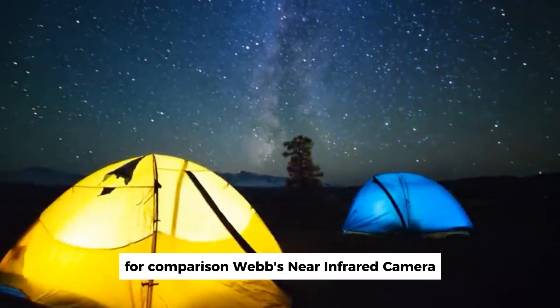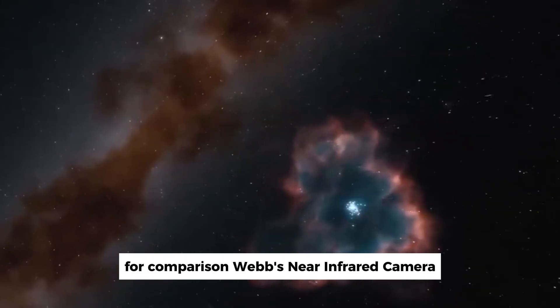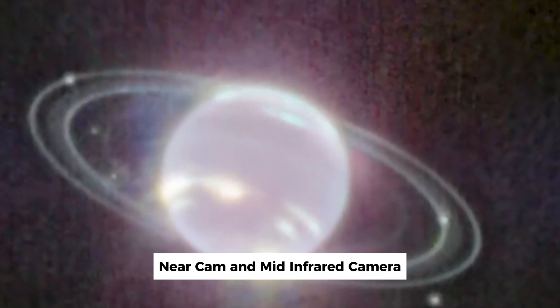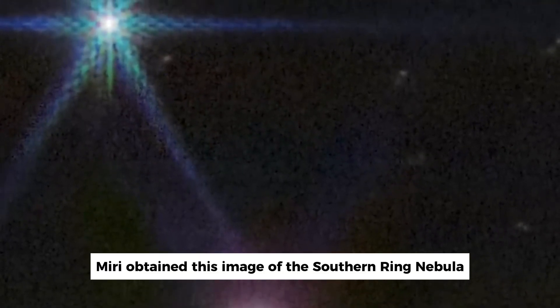For comparison, Webb's near-infrared camera, NIRCAM, and mid-infrared camera, MIRI, obtained this image of the Southern Ring Nebula, NGC 3132. The sky image is oriented by the north and east compass arrows.